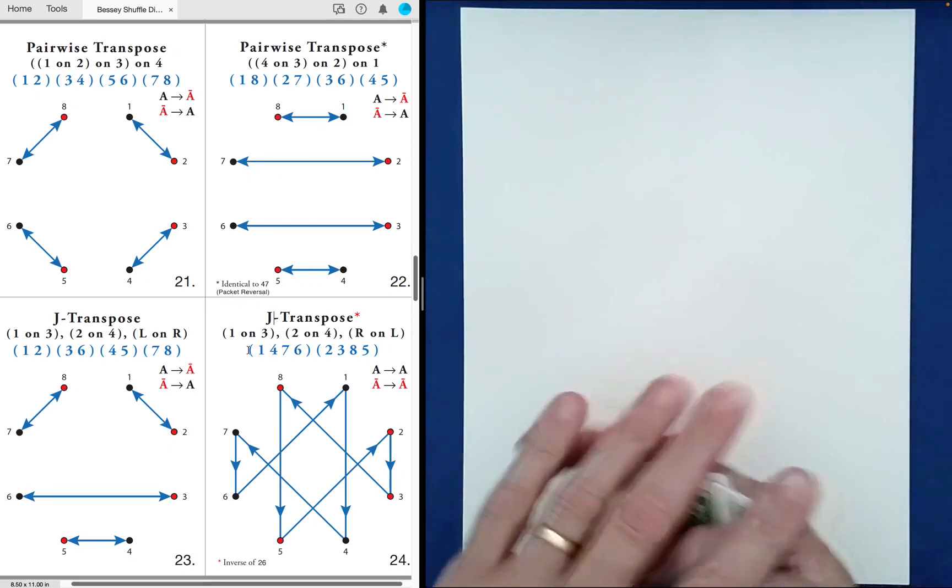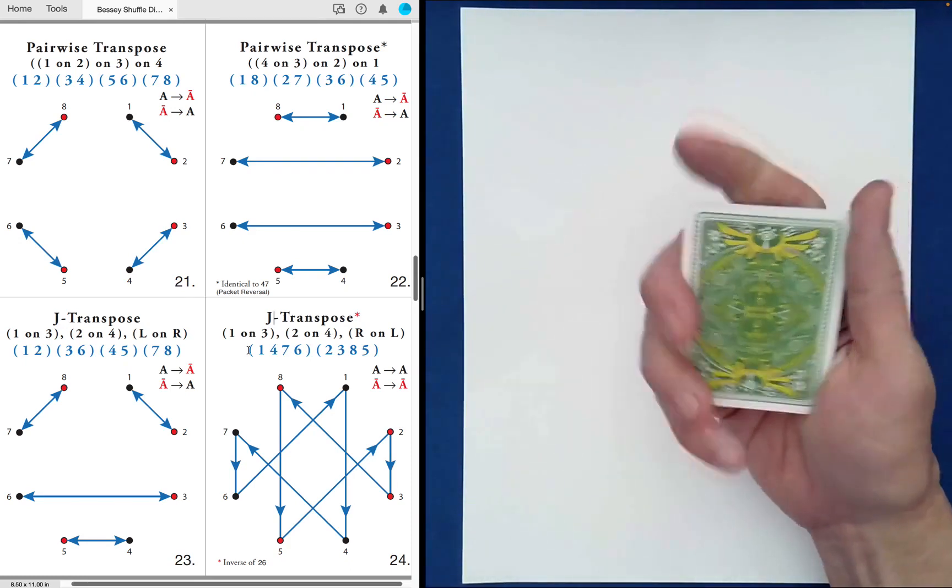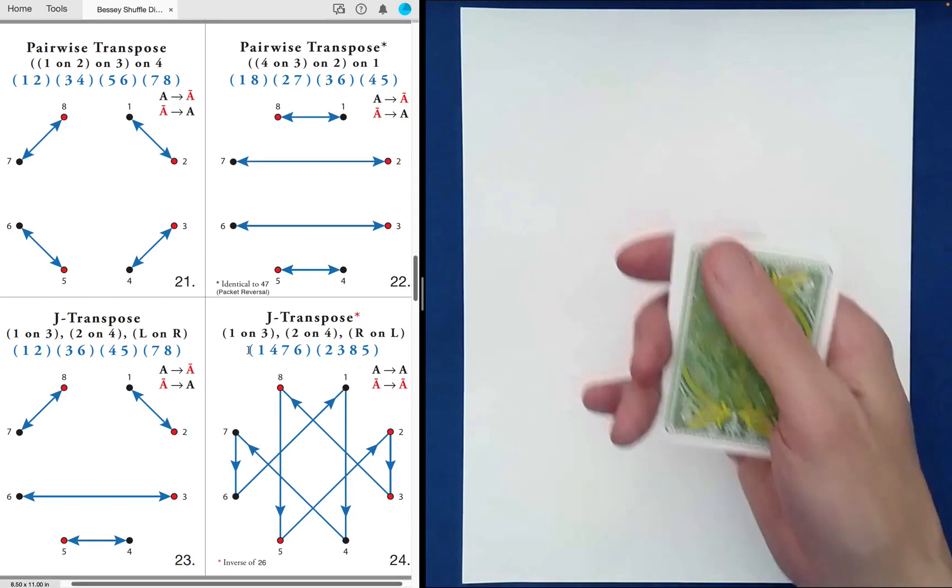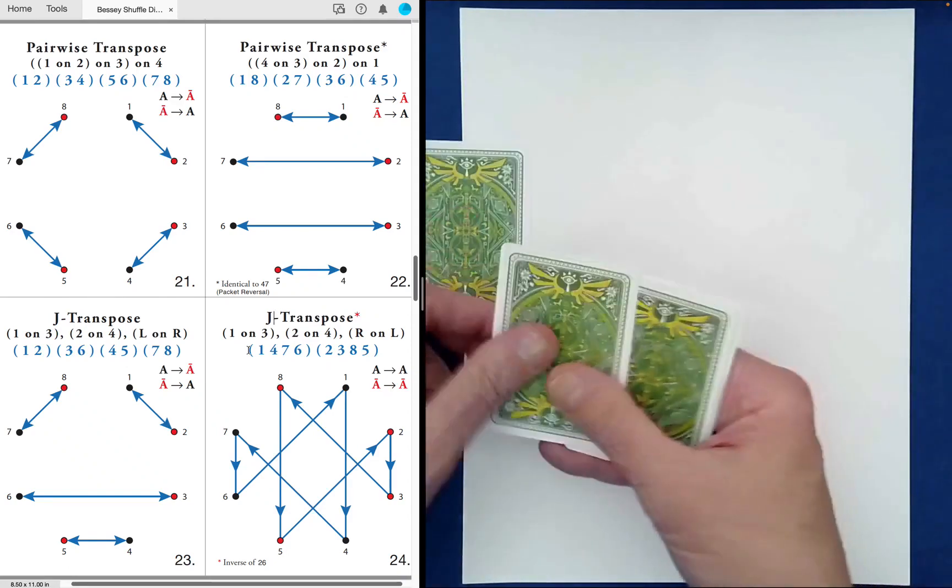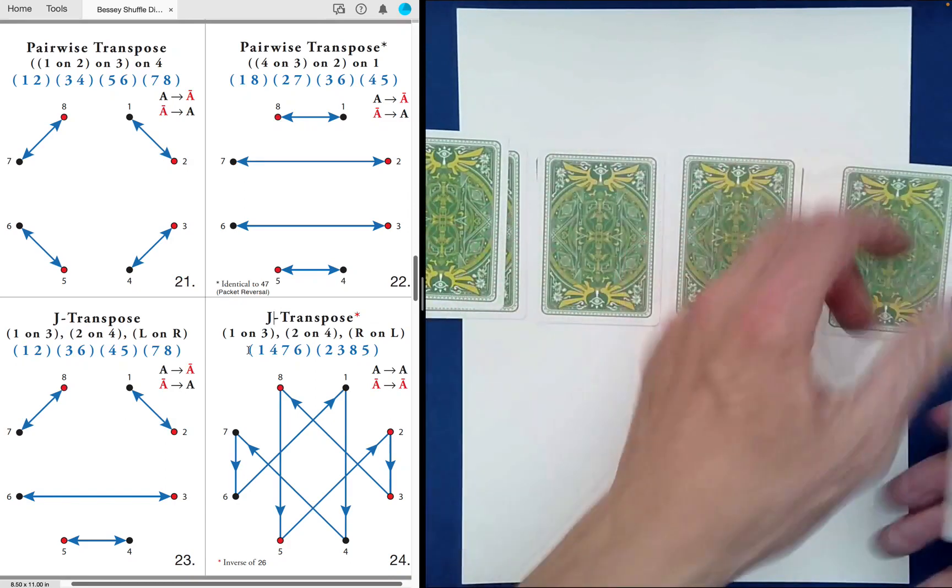Okay, so we've performed shuffle 23. Which one would you like next? 22? Okay, that would be just fine. So we deal out into these little pairs. One, two, one, two.